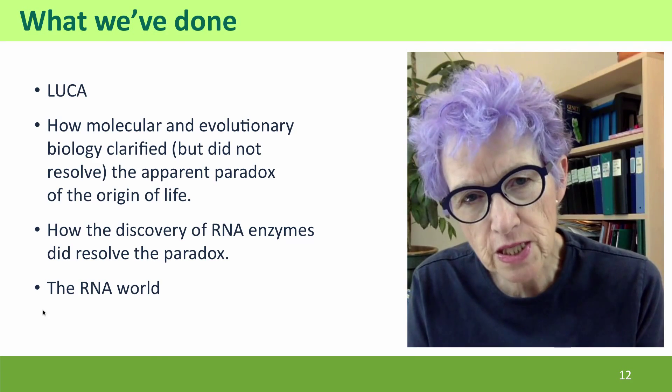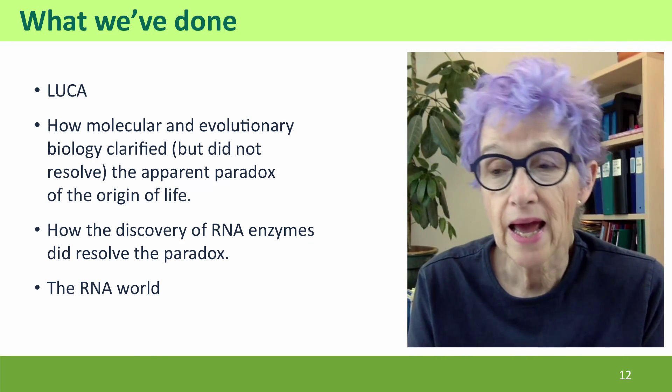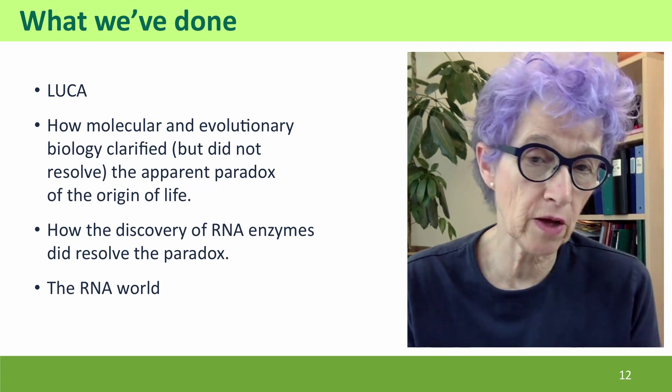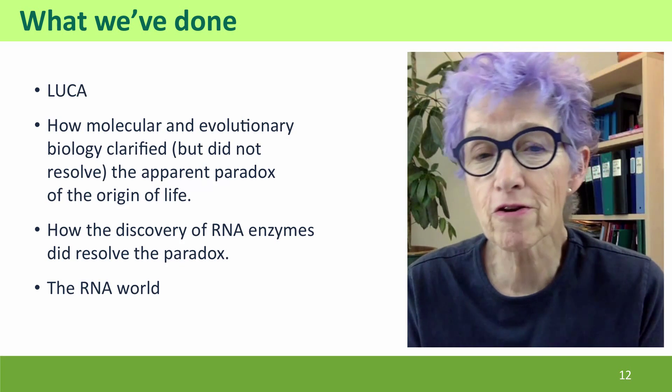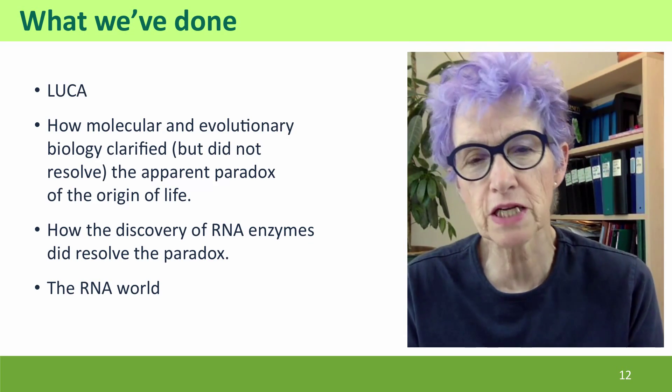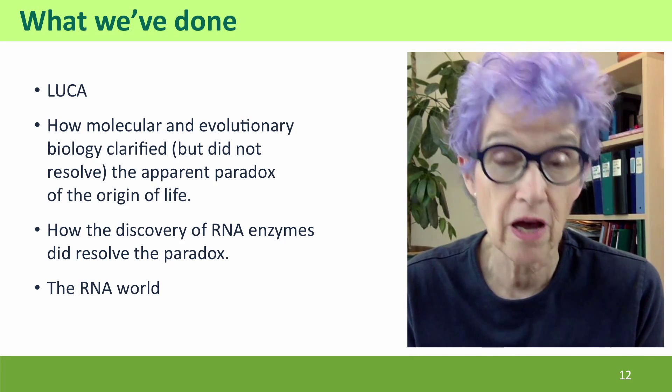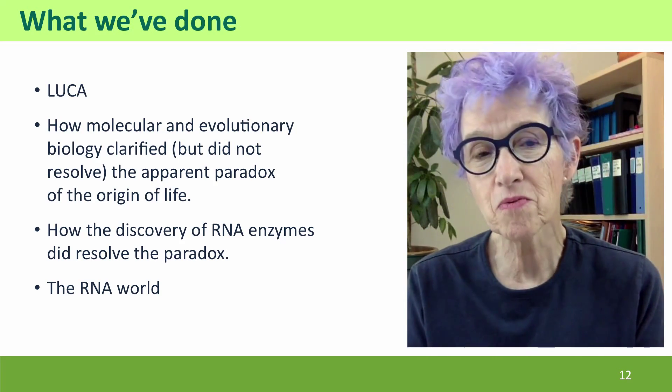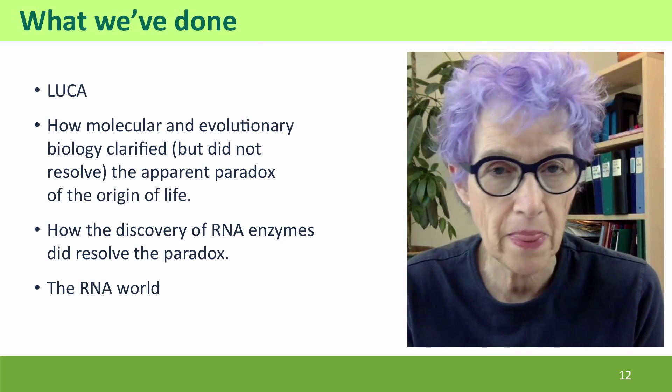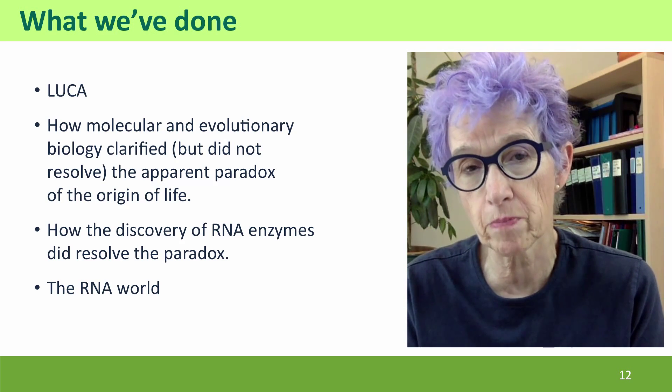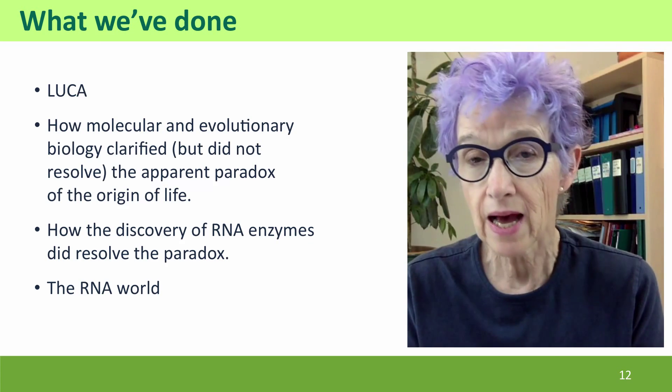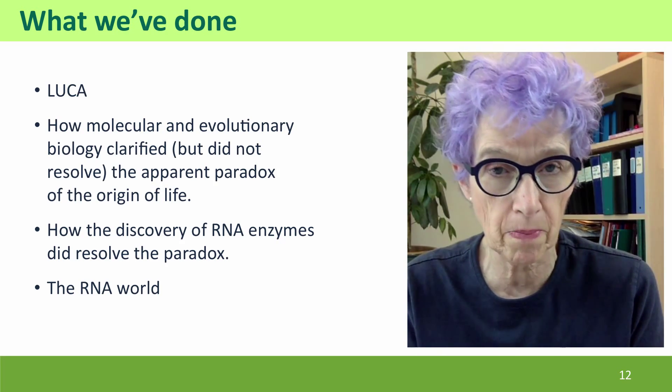So we first considered the last universal common ancestor and the properties of the early Earth. We've talked about how thinking about molecular biology and evolutionary biology originally clarified but didn't resolve the paradox by pointing out that the real problem was how do you get functioning protein synthesis machinery that needs proteins before you have any proteins. And then we talked about how the discovery of catalytic RNAs, RNAs that act as enzymes, resolved the paradox. And we described the RNA world that we now hypothesize was the first living entities, the first entities that were subject to natural selection and thus capable of evolution to become more complex and more sophisticated.